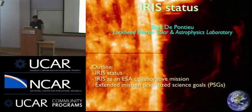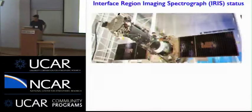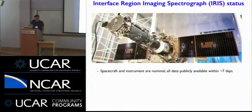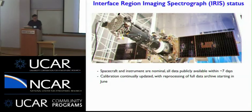So this is a movie of a coronal mass ejection that we obtained last year. IRIS is the Interface Region Imaging Spectrograph. The spacecraft instruments are nominal. All of our data remains publicly available within seven days and usually gets calibrated — you usually get quick look movies faster than that, but the data is usually calibrated within seven days. We continue to update the calibration and with the spectrograph you often find that things are changing or not quite as you thought at the beginning of the mission.